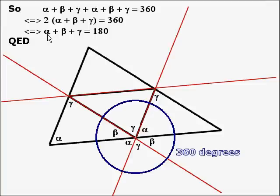And therefore, quite trivially, alpha plus beta plus gamma is 180. So these three angles add up to 180 and that's what we have to prove.